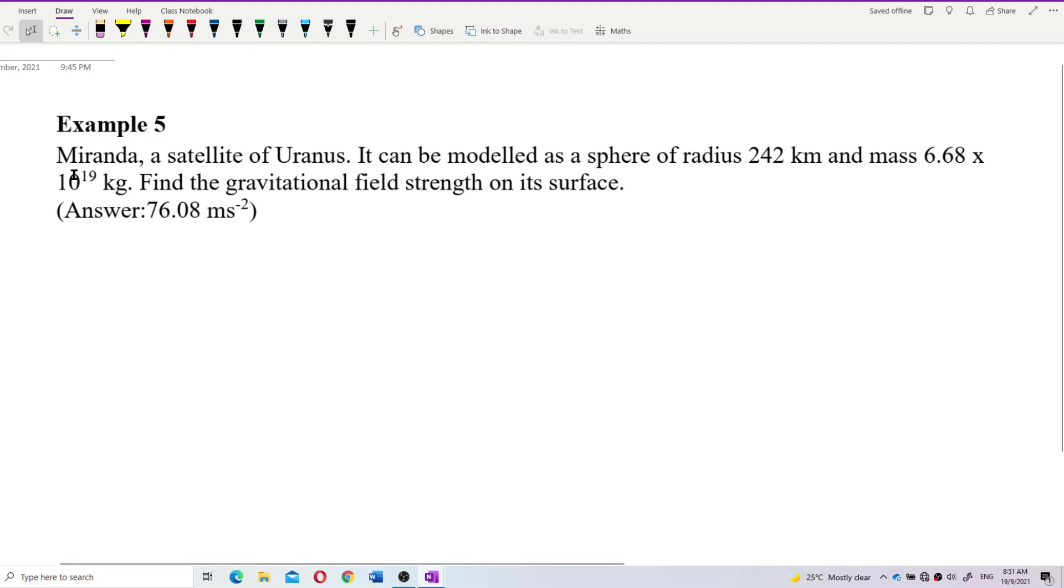Okay, Miranda, a satellite of Uranus. It can be modeled as a sphere of radius 242 kilometer and mass 6.68 exponent 19 kilogram. Find the gravitational field strength on its surface.